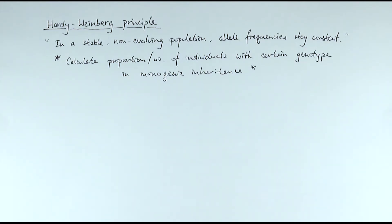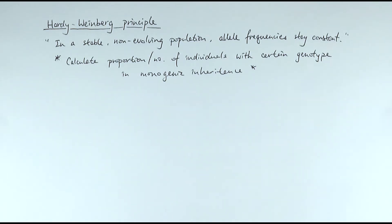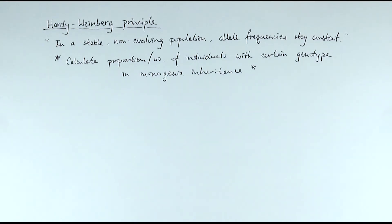So we'll start off with what the Hardy-Weinberg principle is. The principle states that in a stable, non-evolving population, the allele frequency would stay constant. What that means is that whenever we apply the Hardy-Weinberg principle, we're saying that nothing is changing. We use this principle to calculate the proportion of individuals with a certain genotype, in terms of monogenic inheritance.